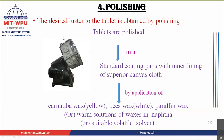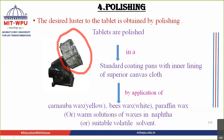Polishing of the tablet is carried out in a standard coating pan. The same machine is used, but the earlier pan is removed and replaced with a pan lined with canvas. This canvas-lined pan is used specifically for polishing. Polishing can be carried out by two methods.